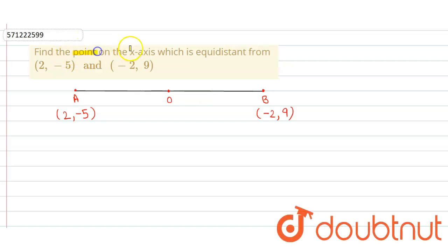In the given question, we have to find the point on the x-axis which is equidistant from the point (2, -5) and (-2, 9).